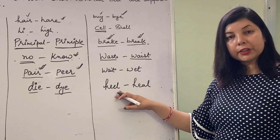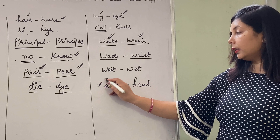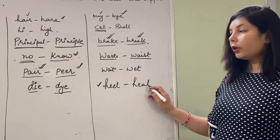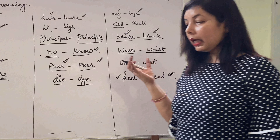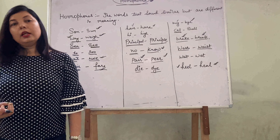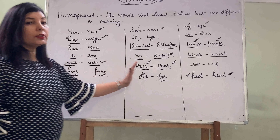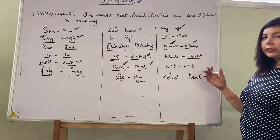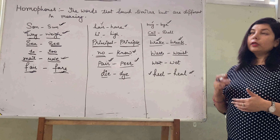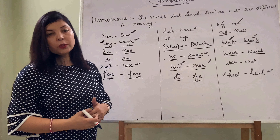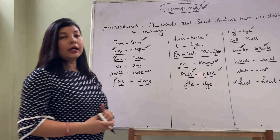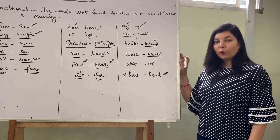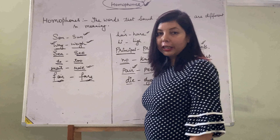Heel and heal. Ye jo 'heel' hai, ye hamare joote chappal ke jo heel hota hai, usko represent karta hai. Or H-E-A-L 'heal' ka matlab, kisi cheez se aapko ghao hai, uske bharne ko hum 'heal' bolte hain. So children, you have seen how words can confuse us through their sound. These all are the list of words that have similar sounds but different meanings. I have attached a list of homophones along with this video. I hope you will go through it and get benefited and try to better your English. Thank you and have a nice day. Please don't forget to subscribe, like and share my video.